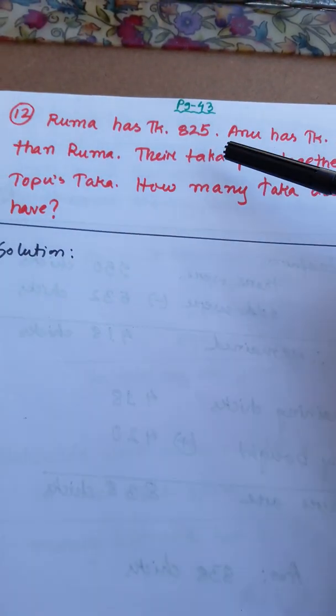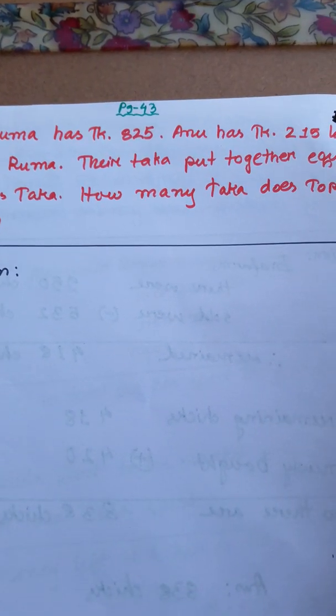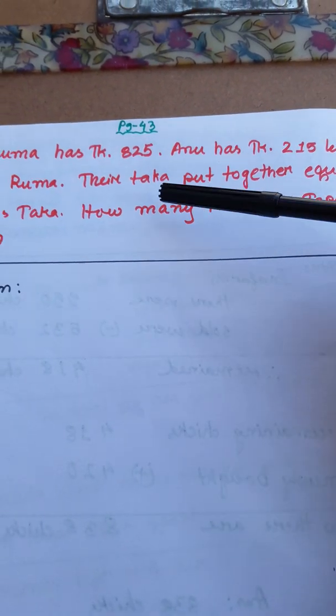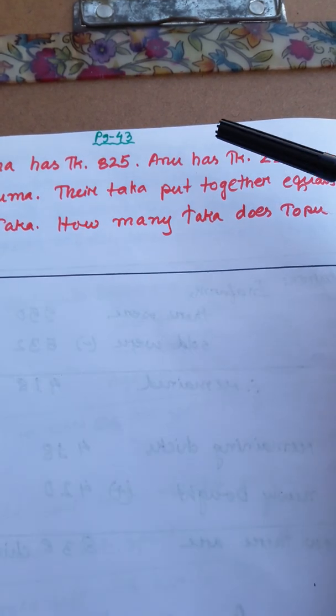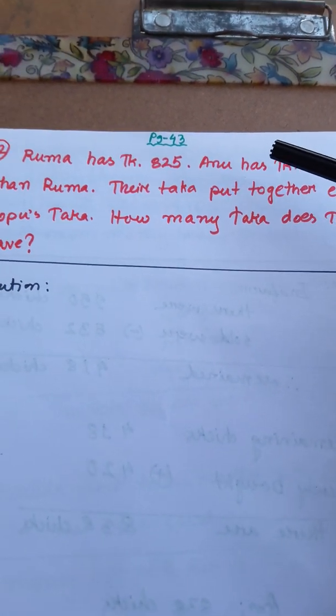Now, the next question. Ruma has Taka 825. Anu has Taka 215 less than Ruma. Their Taka put together equals Topu's Taka. How many Taka does Topu have?